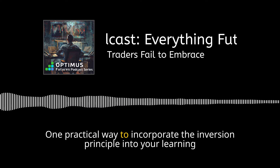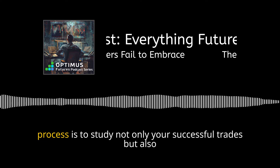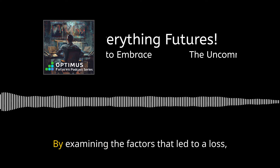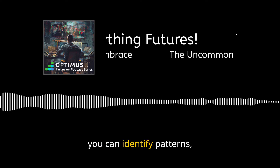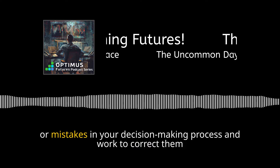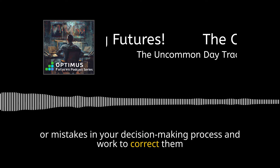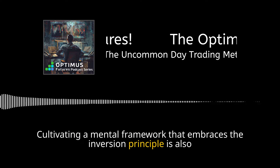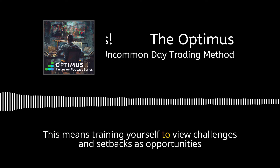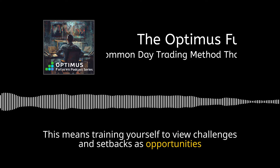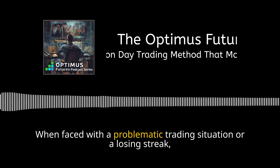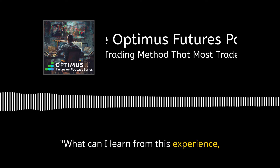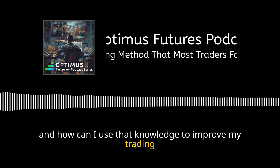One practical way to incorporate the inversion principle into your learning process is to study not only your successful trades, but also your losing ones. By examining the factors that led to a loss, you can identify patterns, biases, or mistakes in your decision-making process and work to correct them in the future. Cultivating a mental framework that embraces the inversion principle is also essential — training yourself to view challenges and setbacks as opportunities for growth and learning. When faced with a losing streak, ask yourself, 'What can I learn from this experience, and how can I use that knowledge to improve my trading going forward?'